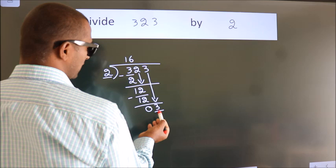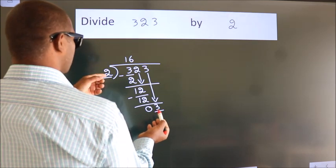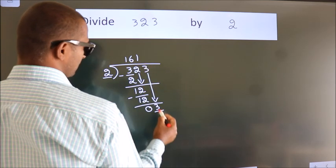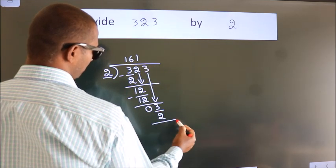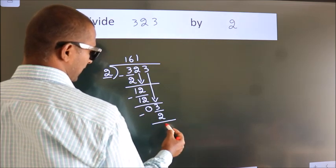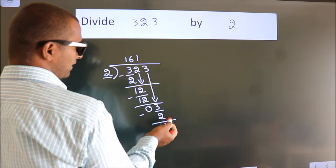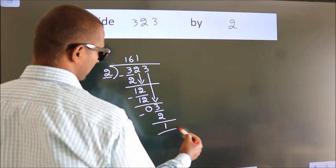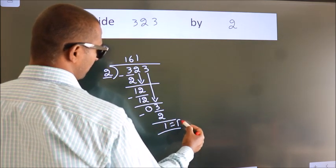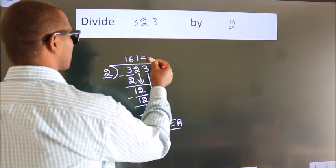A number close to 3 in 2 table is 2 ones 2. Now, we subtract. We get 1. No more numbers to bring it down. So, we stop here. This is our remainder. This is our quotient.